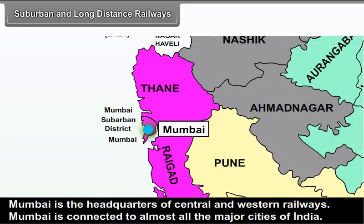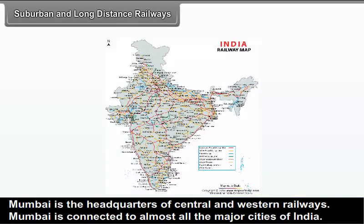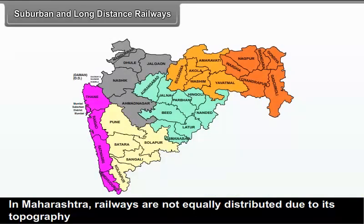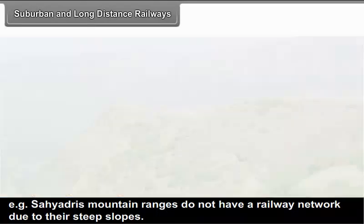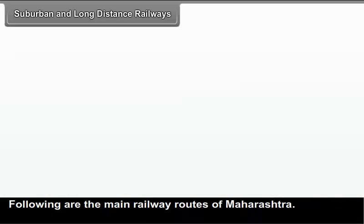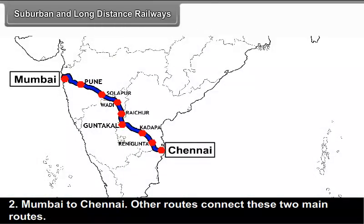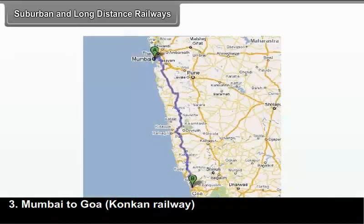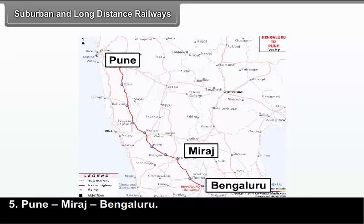In Maharashtra, railways can be divided as suburban and long distance. Suburban railways include local, metro, and monorail. In hilly areas, many trains run on narrow-gauge tracks, which are very useful — for example, Neral to Matheran. Mumbai is the headquarters of Central and Western Railways and is connected to almost all major cities of India. Railways in Maharashtra are not equally distributed due to topography; for example, the Sahyadri mountain ranges do not have a railway network due to their steep slopes.